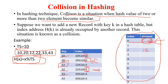Now coming to 33. If you calculate the index of 33, you will get 3. Check the hash table — is the third index free? Yes, the third index is free. So 33 is going to be stored at the third index. Now coming to 43. Calculate the index of 43 and you will get the third index. Check the hash table — is the third index free? No, it is already filled, so you cannot store 43.